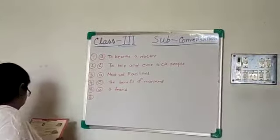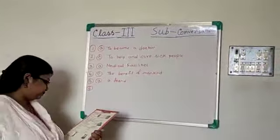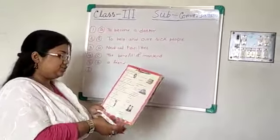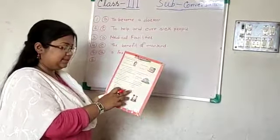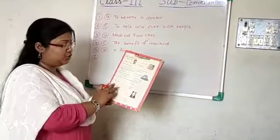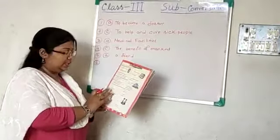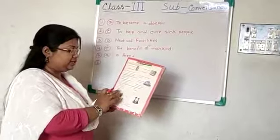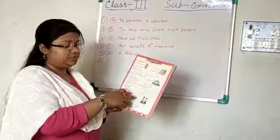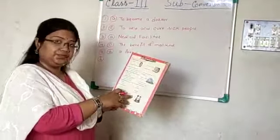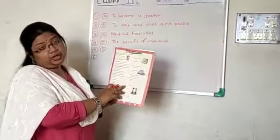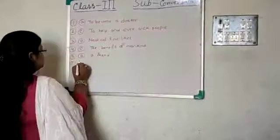Question number 6: a friend should — A, be good; B, be sympathetic; C, be kind; D, all of these. We all know that a friend should be good and be kind, so all three options are the answer. I go for option D: all of these.